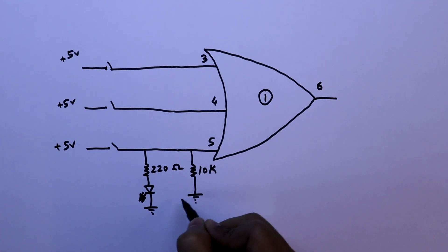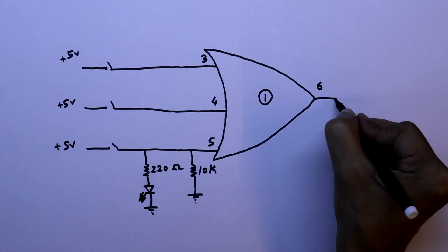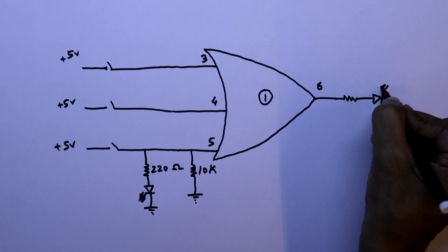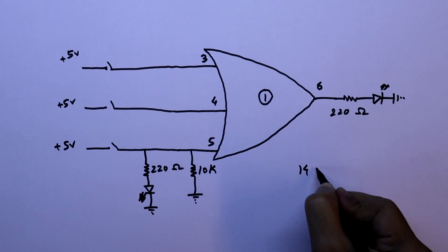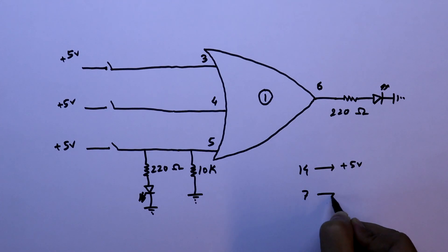Now we have to do the same thing with all the inputs. To see the output, we are connecting an LED. The series resistor is 220 ohms. Pin 14 will go to plus 5V and pin 7 to ground.